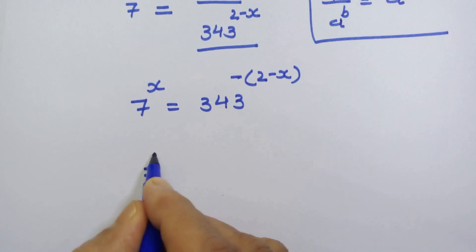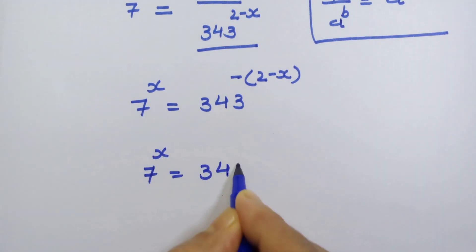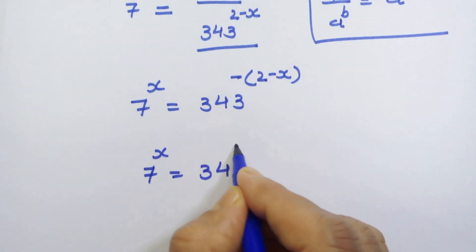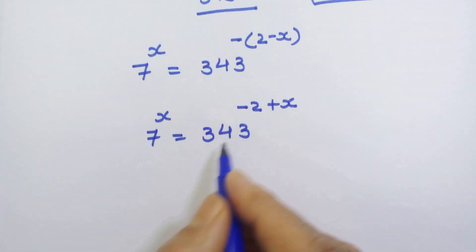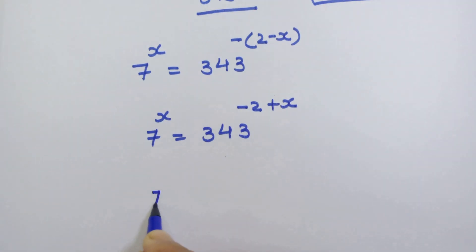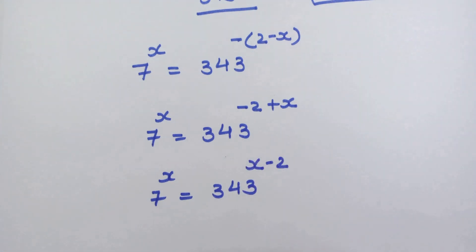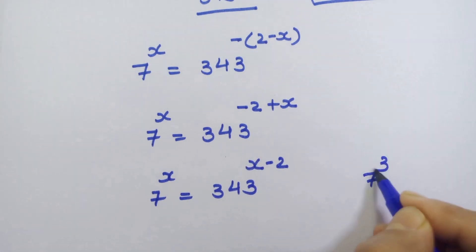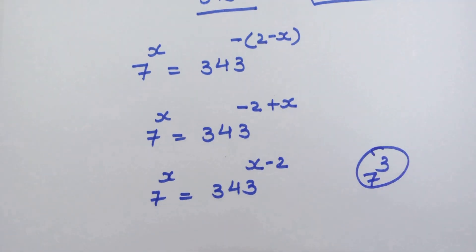Now we open this bracket, so we have 7 raised to x is equal to 343 raised to (minus 2 plus x). We can also write this as 343 raised to (x minus 2). Now, 343 is 7 cubed, so we write 7 cubed instead of 343.